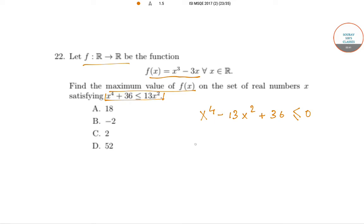We can just replace x squared by y to make it a quadratic inequality. Now we have y squared minus 13y plus 36 is less than equal to 0, so it's an easy solution.